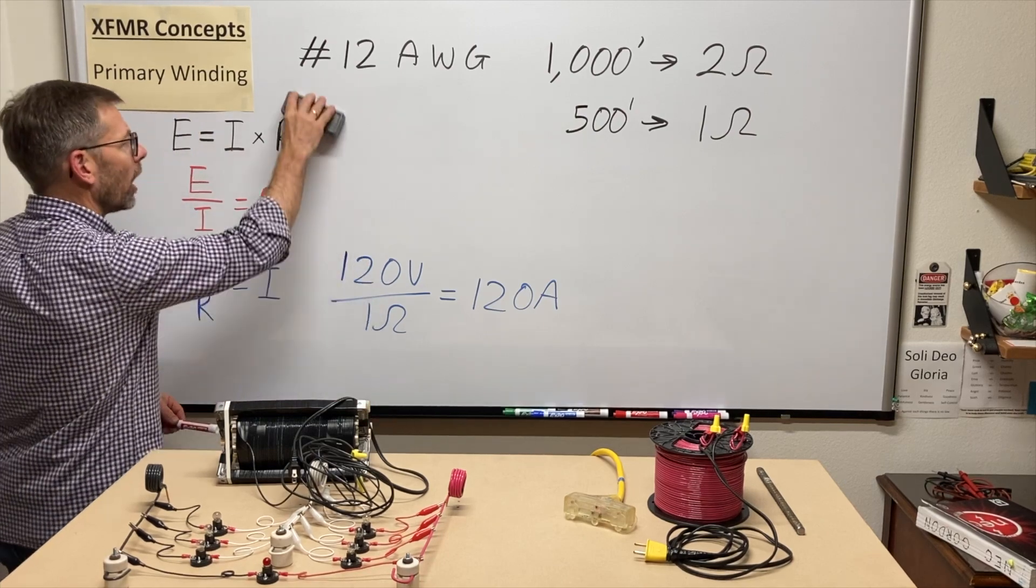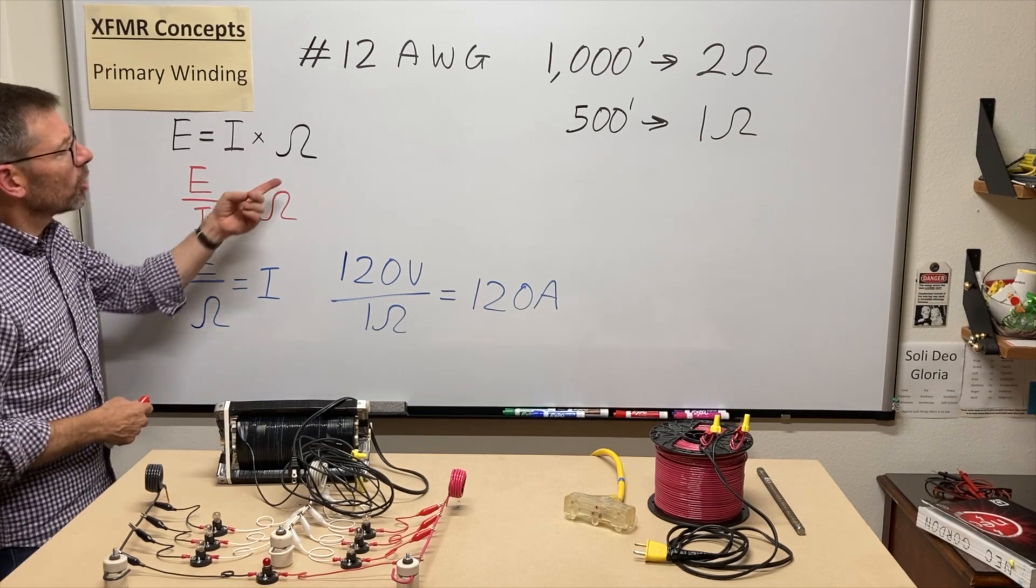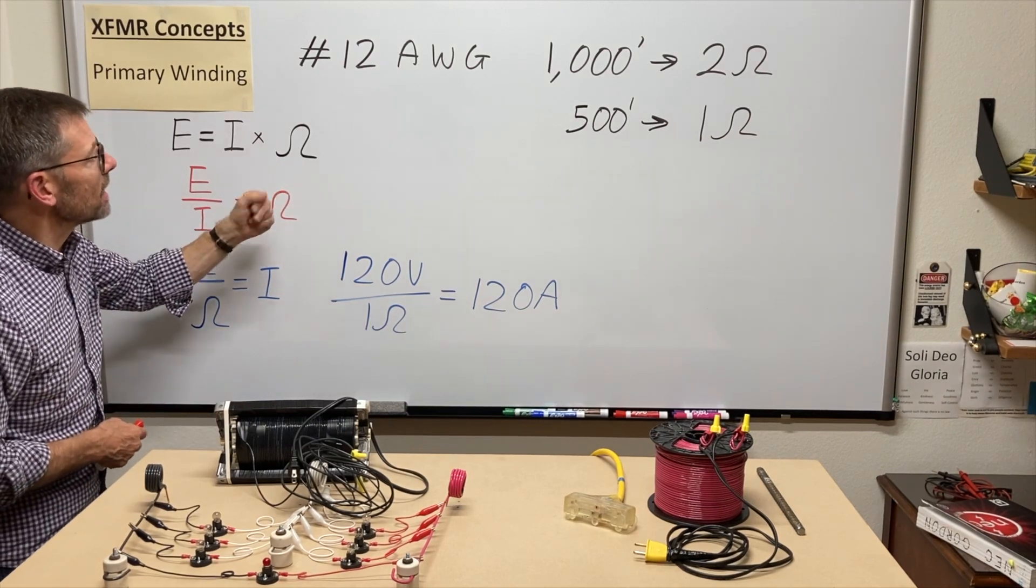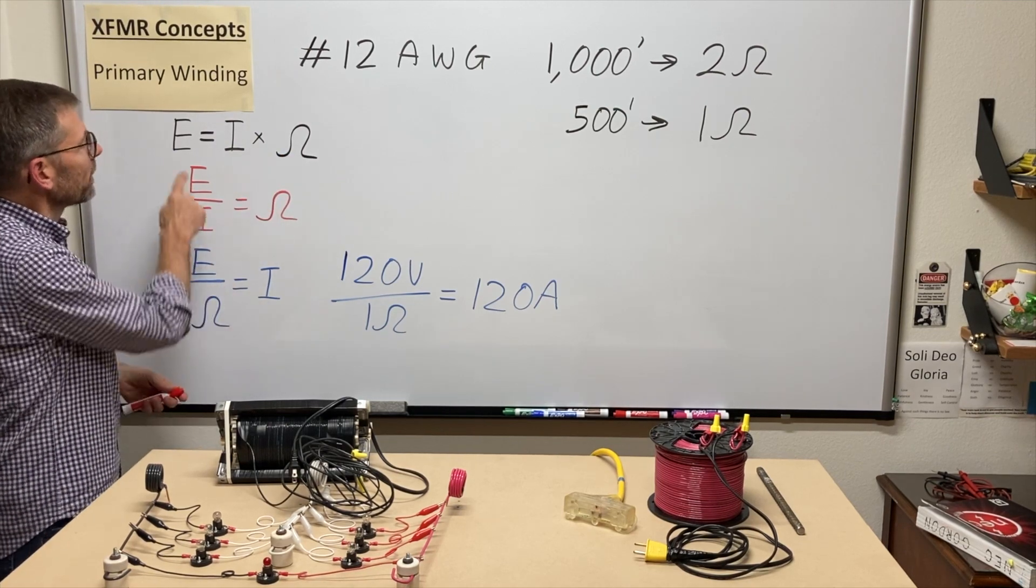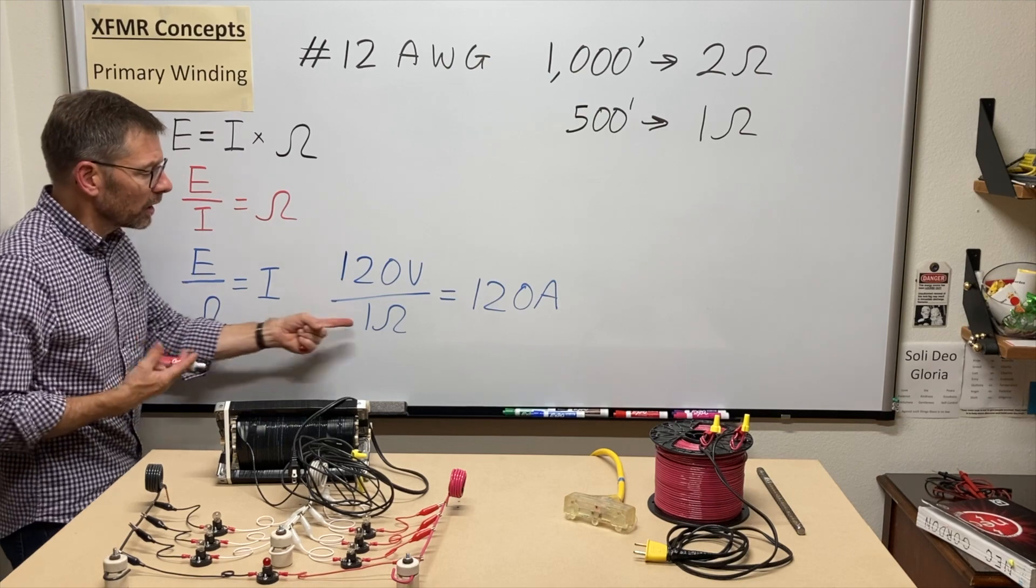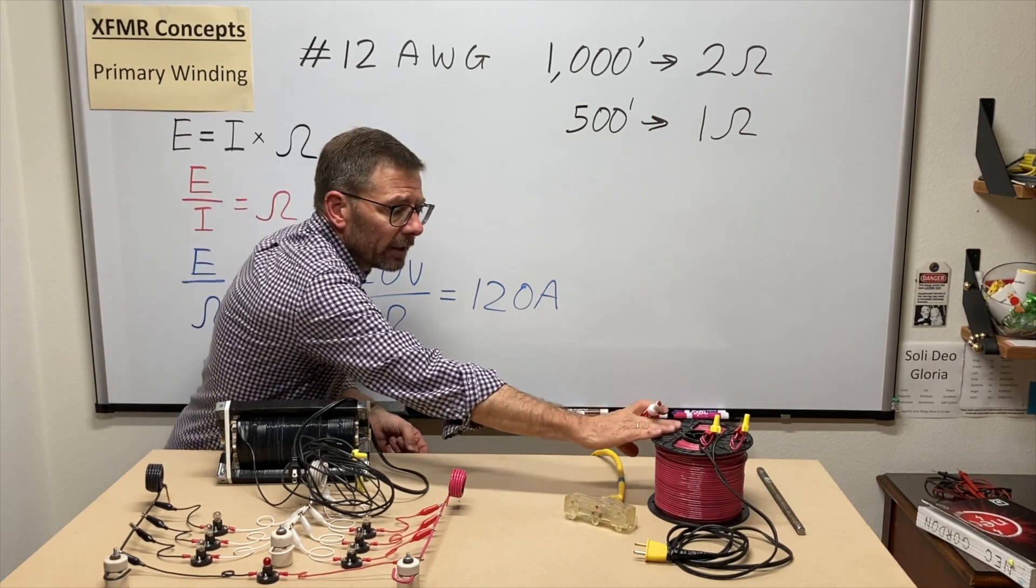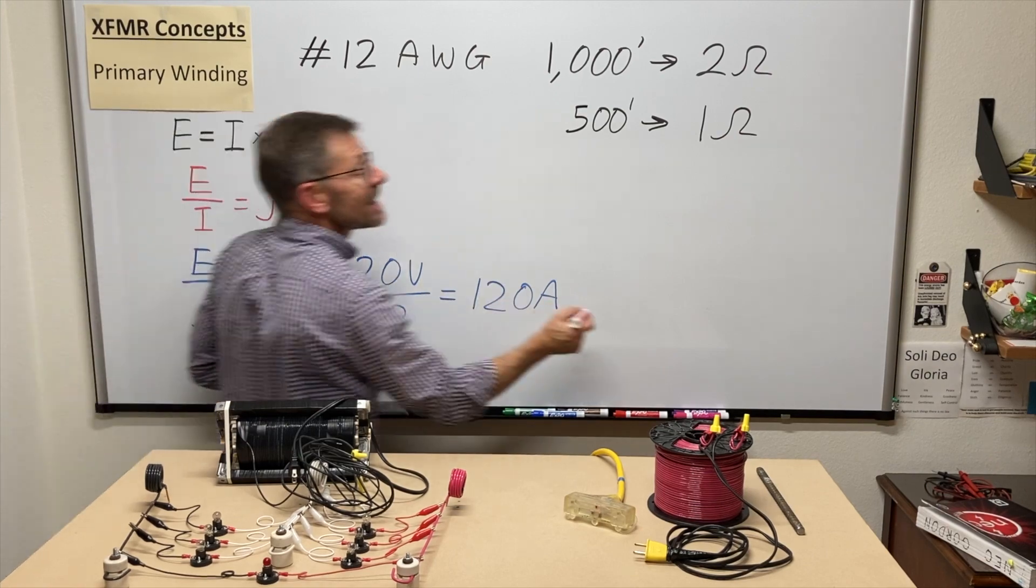often change the letter R to something different. It could be XL, X sub C, could be Z, could be R. I'll just use ohms for now, because voltage will always equal current times ohms. Sure, whether the wire was on the coil or laid out, there was one ohm of resistance.